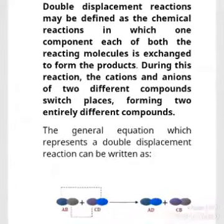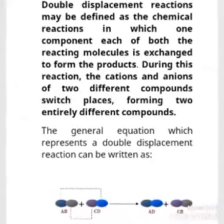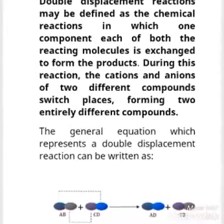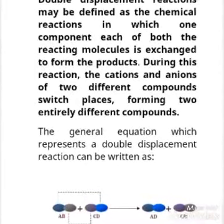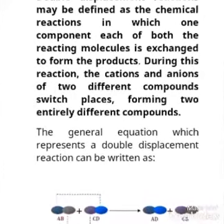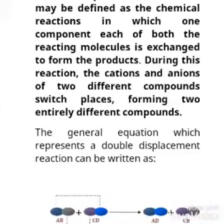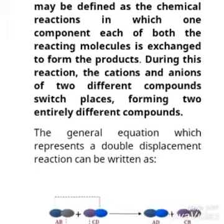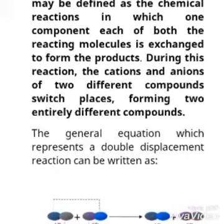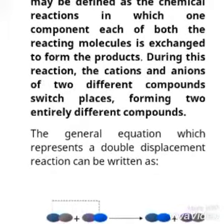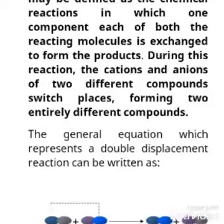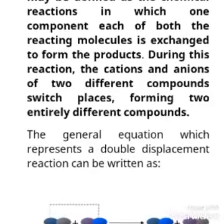Number 4: Double displacement reaction. It is a reaction in which two compounds exchange their partners so that two new compounds are formed. In a double displacement reaction, there is usually an exchange of ionic radicals. For example, when sodium chloride is reacted with silver nitrate solution, they exchange their partners to form two different compounds: silver chloride and sodium nitrate.